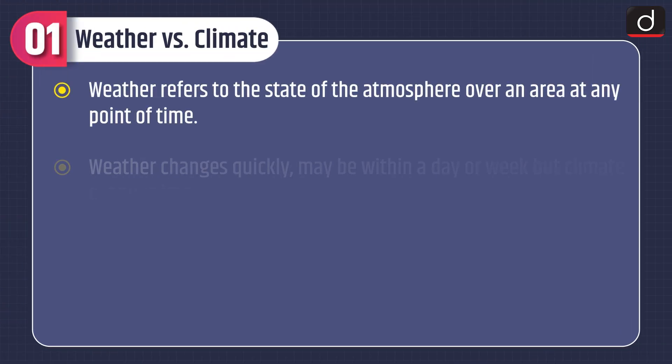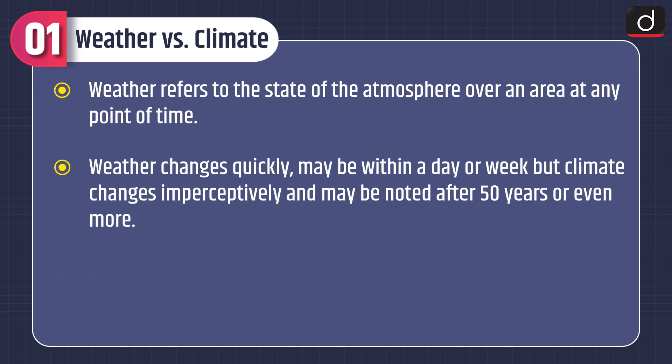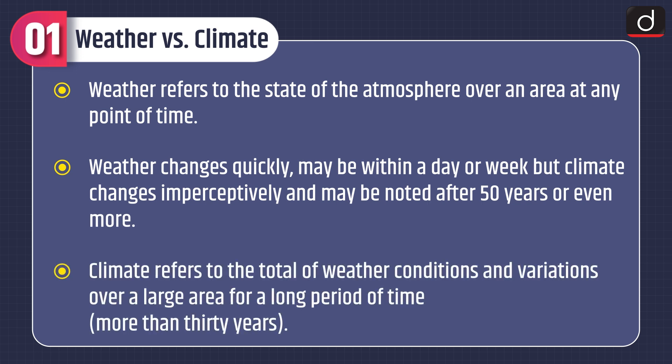Let's compare weather versus climate. Weather refers to the state of the atmosphere over an area at any point of time. Weather changes quickly, maybe within a day or week, but climate changes imperceptibly and may be noted after 50 years or even more. Climate refers to the total of weather conditions and variations over a large area for a long period of time, i.e. more than 30 years.